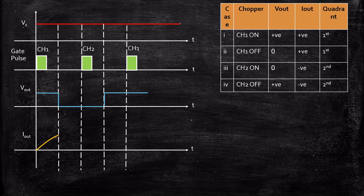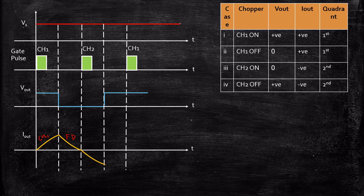When CH1 turns off, the inductor reverses its polarity and discharges through the freewheeling diode and resistor R. When CH2 turns on, the current flows in the negative direction — the inductor charges in reverse polarity because current flows from the load to the source. When CH2 turns off, diode D conducts and the inductor discharges through resistor R. The current flows from load to source through diode D and decays back to zero.